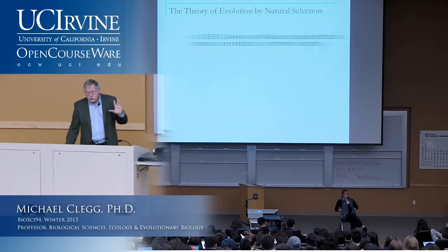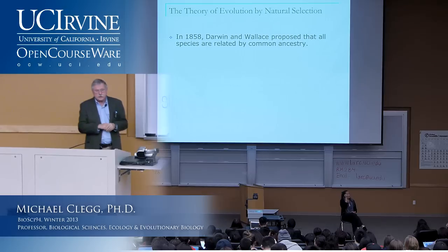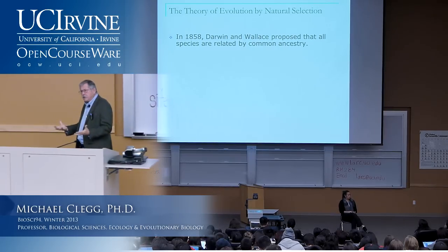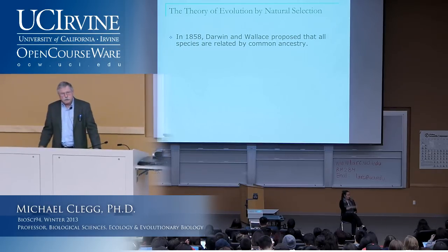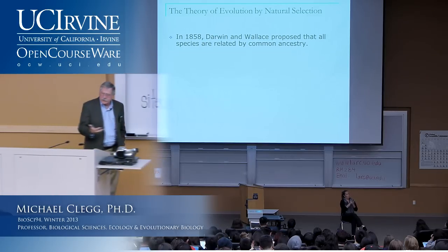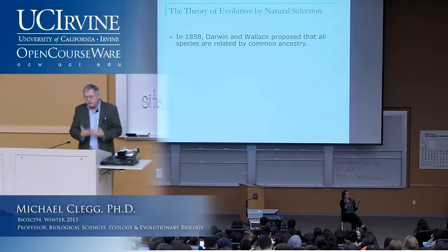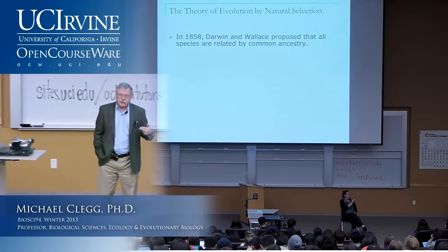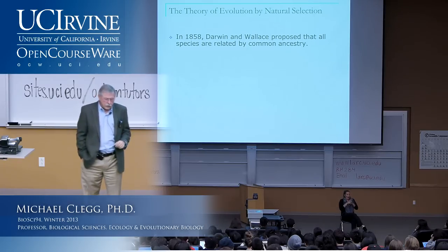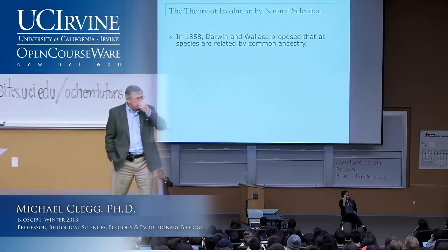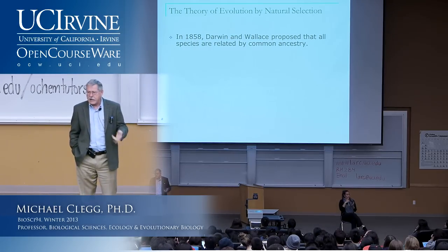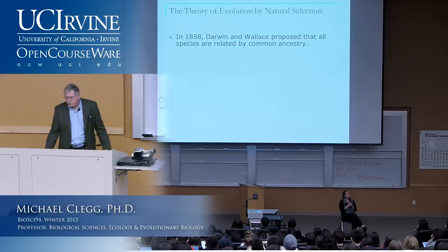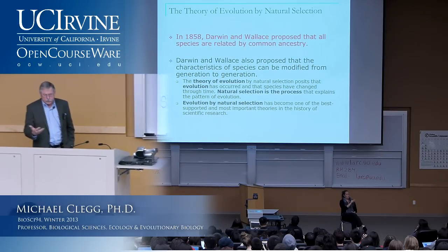A word or two about the theory of evolution by natural selection — we'll come back on Wednesday to talk more about this. In 1858, around the middle of the 19th century, two people wrote an article that proposed the theory of evolution by natural selection. One, of course, we all know — that's Charles Darwin, the famous 19th century naturalist who wrote extensively on a wide variety of evolutionary subjects. The other was a man less well-known but equally credited with coming up with this theory: Alfred Russell Wallace. I'll tell you more about their story on Wednesday.